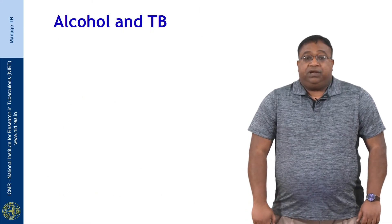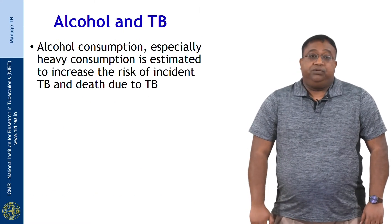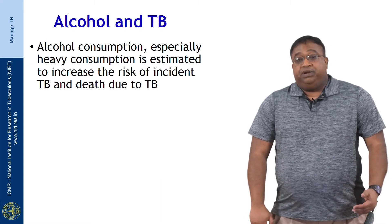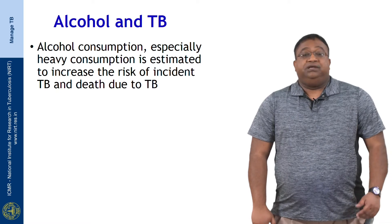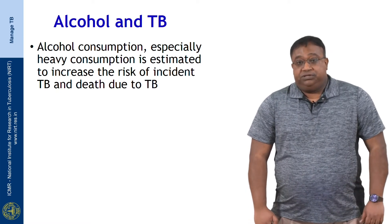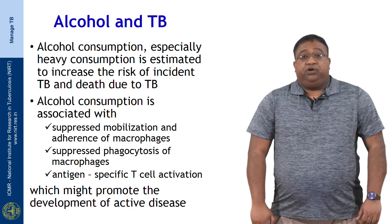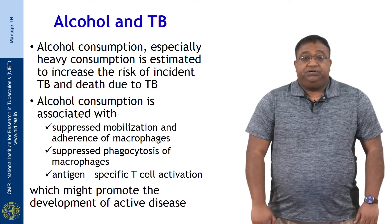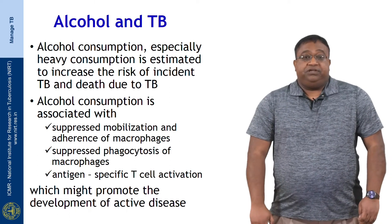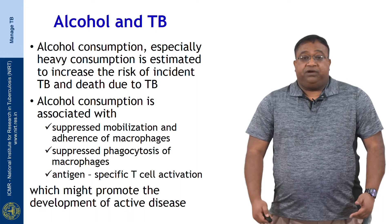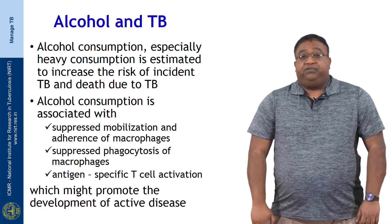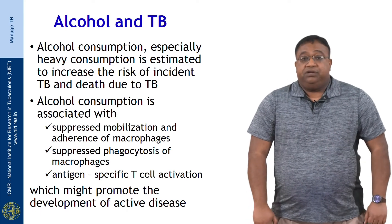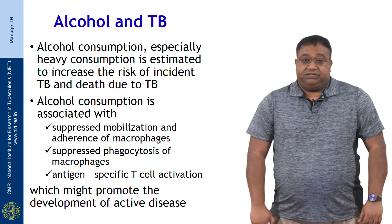Finally, alcohol consumption — especially heavy consumption — is estimated to increase the risk of incident TB as well as the risk of death due to tuberculosis. This is typically associated with impairment of certain immune responses, including suppressed mobilization and adherence of macrophages, suppressed phagocytosis of macrophages, and diminished antigen-specific T cell activation, all of which might contribute to the development of active disease.